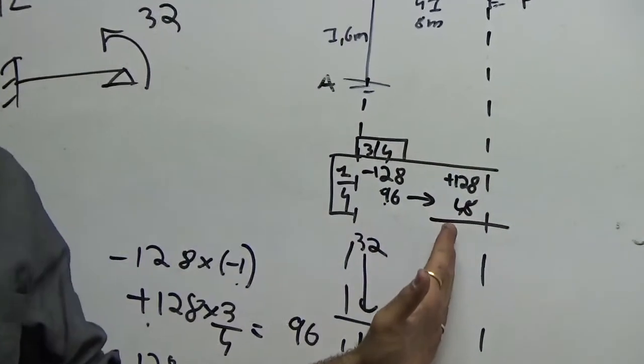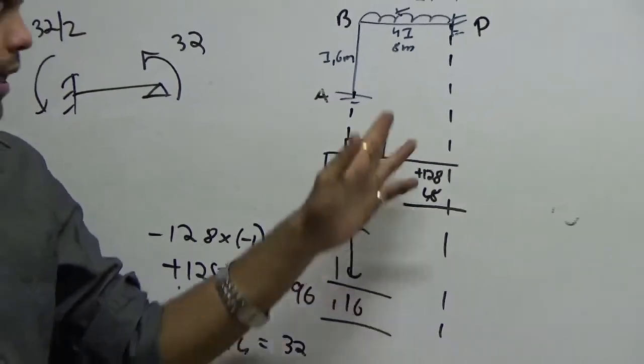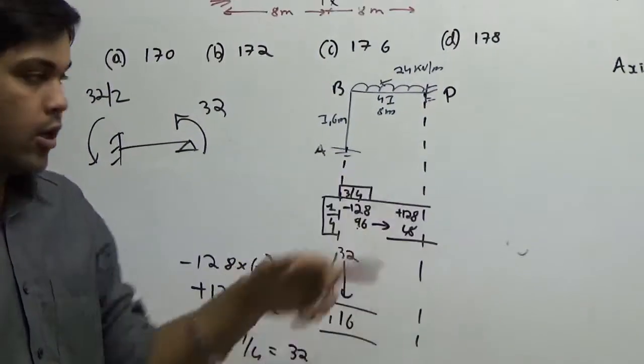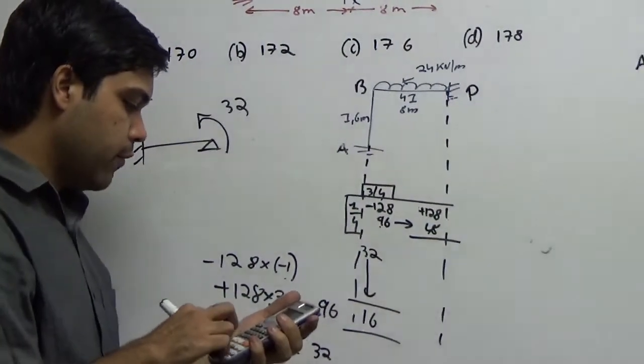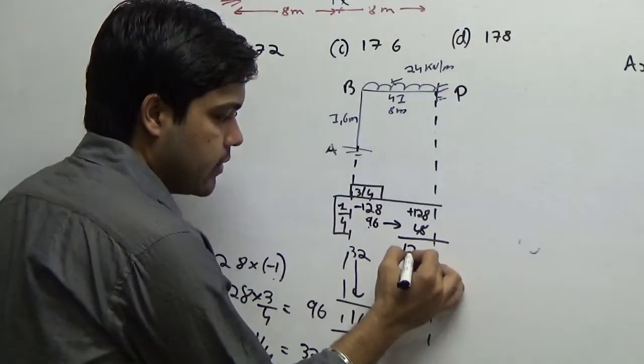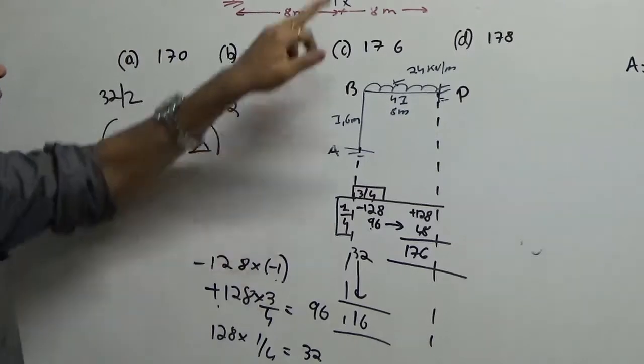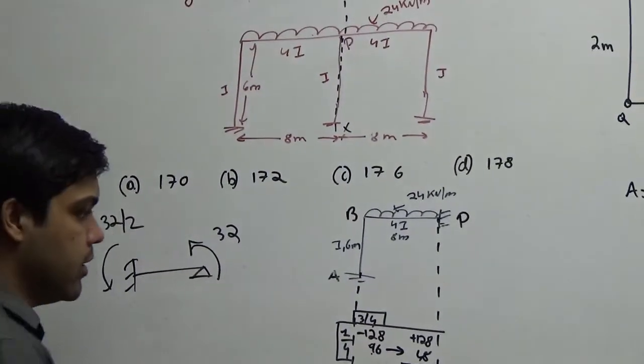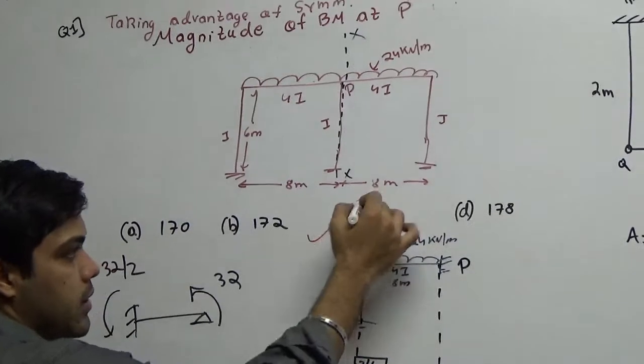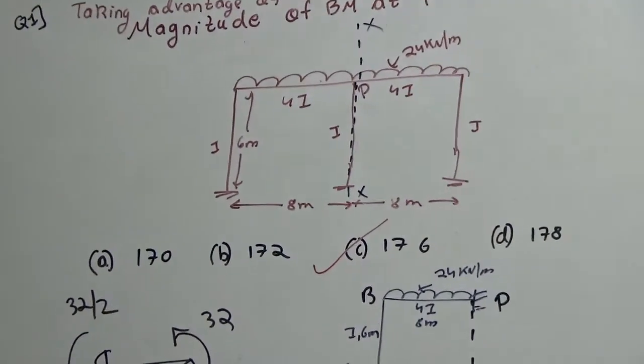If I want to further solve it, there is no more distribution in this case because this end is a fixed end. So what is the sum of 128 and 48? It's 176. Is it not the question it is asking for? It is asking the moment at B which is nothing but 176. So your answer is 176, option number C.